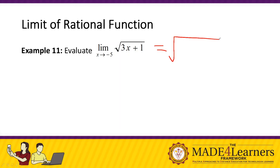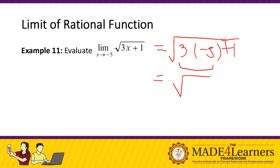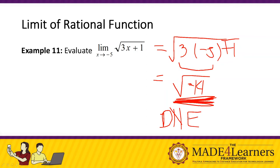Now let's do it manually for the negative case. Using substitution with x = –5: we get √(3(–5) + 1) = √(–15 + 1) = √(–14). Whenever this happens — a square root of a negative number — we simply say the limit does not exist. Remember, whenever we write DNA there should never be an equal sign.